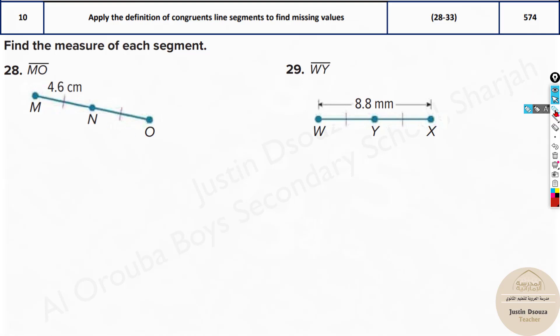That means they are congruent. Now how would you find the total length of MO? MN is given as 4.6 so this is also 4.6. Add them up it'll be 9.2 centimeters.